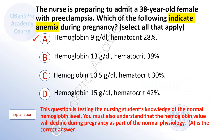The correct answer is A — hemoglobin 9, hematocrit 28%. This question tests the nursing student's knowledge of normal hemoglobin levels. You must also understand that the hemoglobin value will decline during pregnancy as part of normal physiology. A is the correct answer.